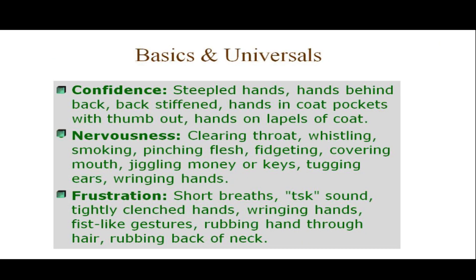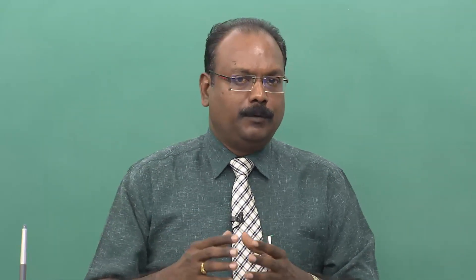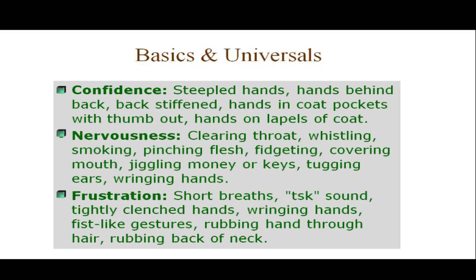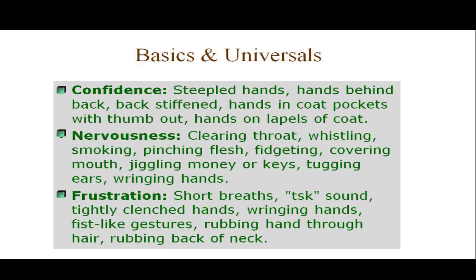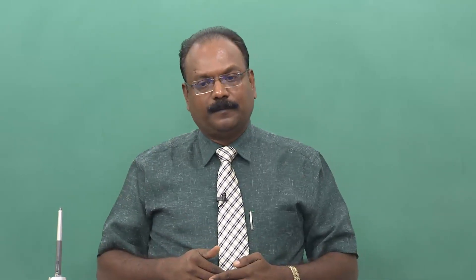Confidence is not something that comes to a person by pretension — it shows when the person is genuinely confident. Steepled hands, hands behind the back while sitting, back stiffened, standing straight, hands in coat pockets with thumbs out, hands on lapels of coat — these indicate confidence. Hands in coat pockets with thumbs in can show the person is defensive. Hands on lapels of coat indicates confidence, but hands trying to hide somewhere inside the coat will indicate insecurity.